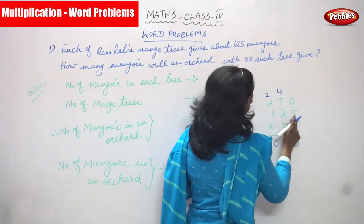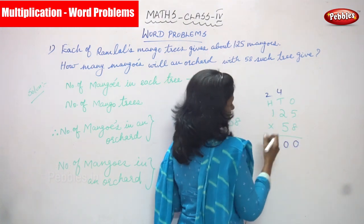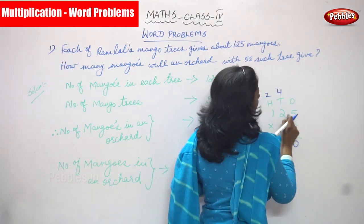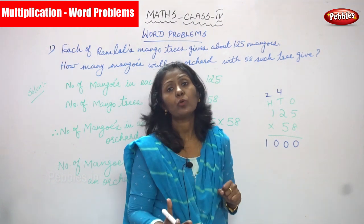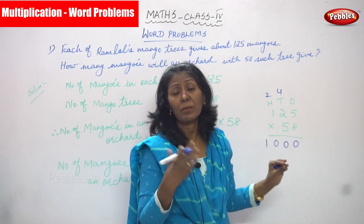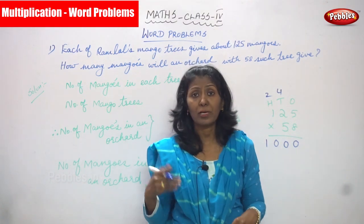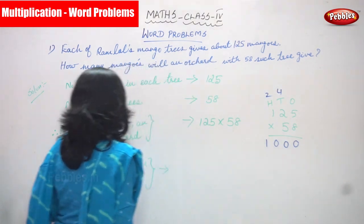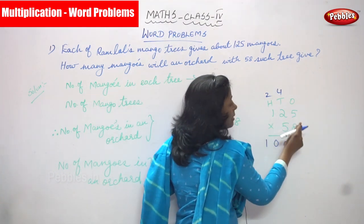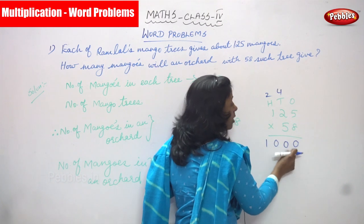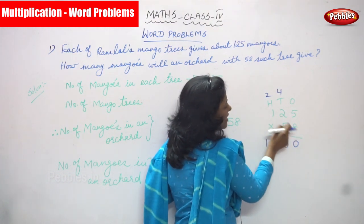Each mango tree gives 125 mangoes, and the number of mango trees is 58, so I'm multiplying them together to find the total number of mangoes in the orchard. Multiplying 125 by 8: 8 fives are 40 — write 0, carry 4. 2 eights are 16, plus 4 is 20 — write 0, carry 2. 1 eight is 8, plus 2 is 10.